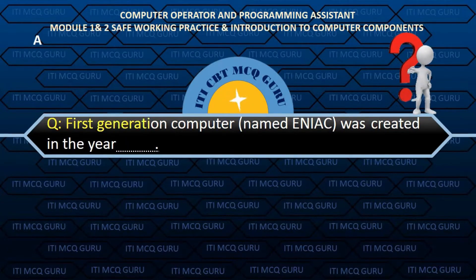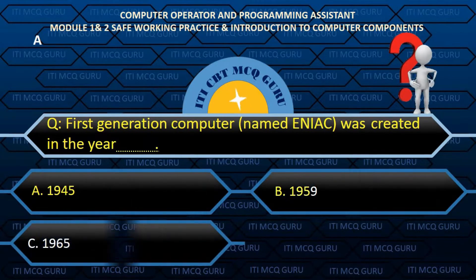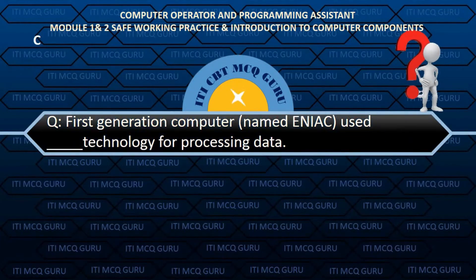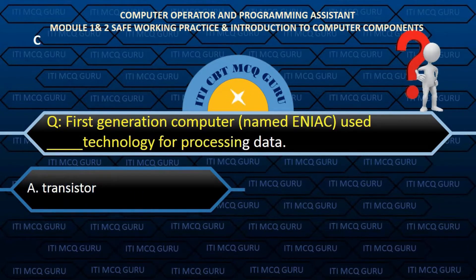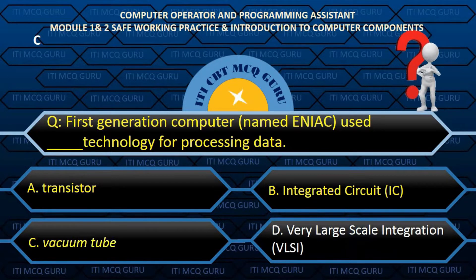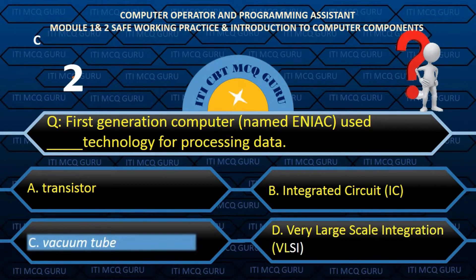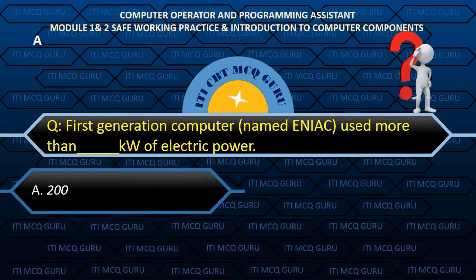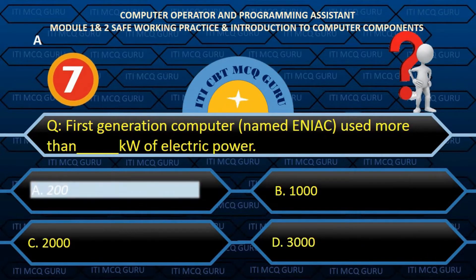First generation computer named ENIAC was created in the year — Answer: A. 1945. First generation computer named ENIAC used vacuum tube technology for processing data — Answer: C. Vacuum tube. First generation computer named ENIAC used more than 200 kW of electric power — Answer: A. 200.